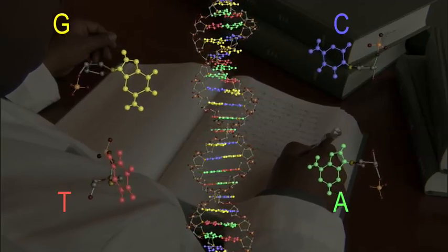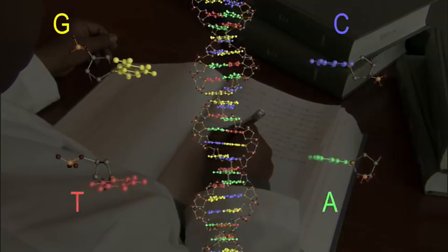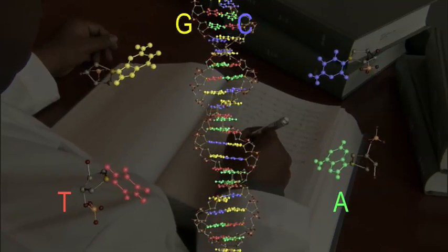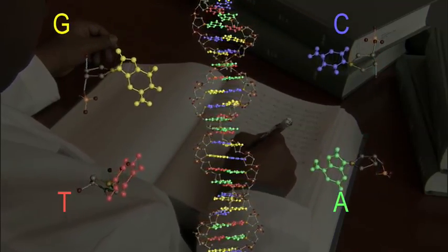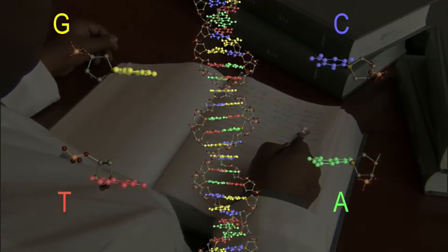There are two of these base molecules for each step on the ladder. And it is always either A and T together, or G and C together. So if you know one side of the step on the ladder, you automatically know the other side as well.